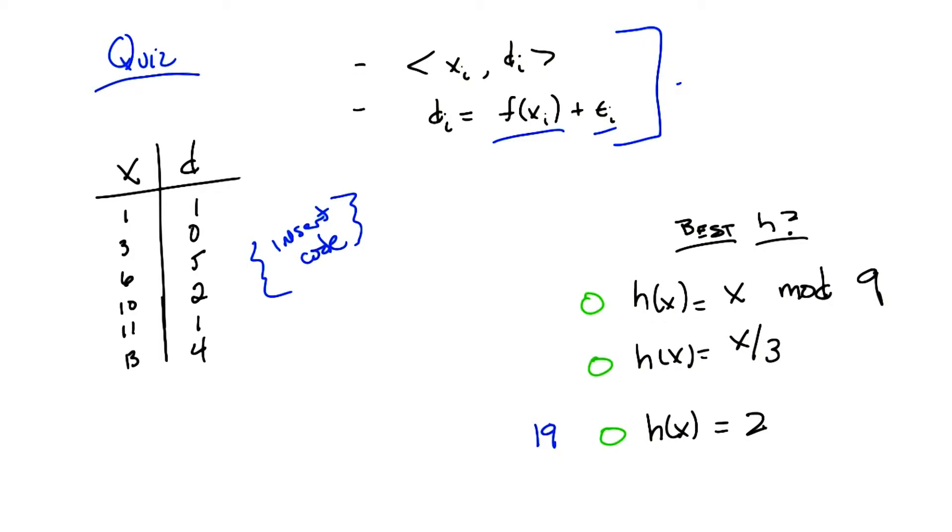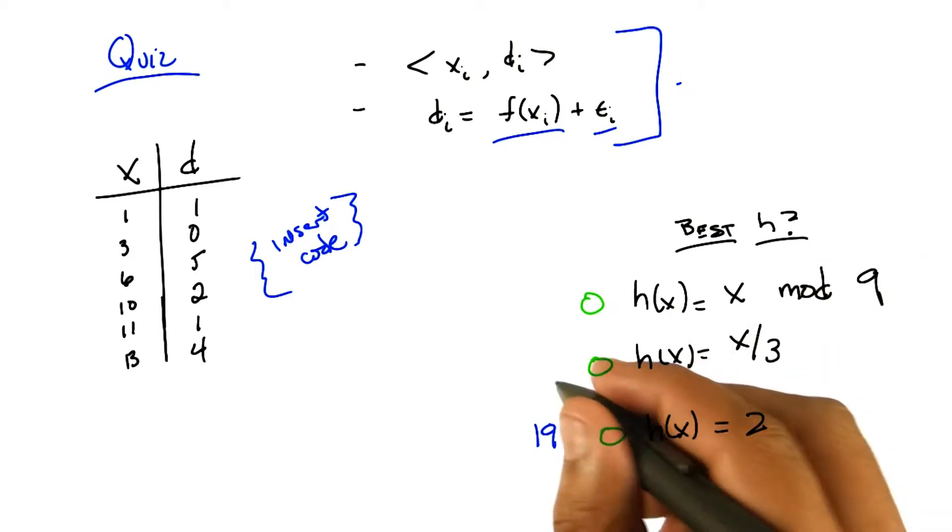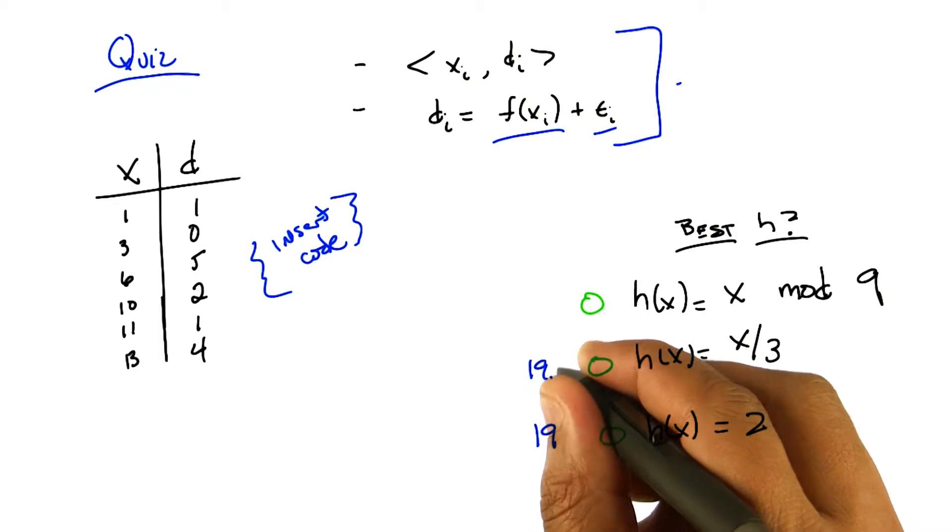And I can do the same thing. Instead of using two, I can use x over three. Take the difference of that to the d values and square that. And I get 19.4. Wow. 4, 4, 4, 4, 4, 4.